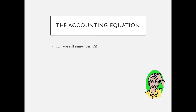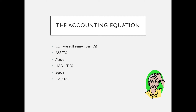A reminder about the accounting equation: assets minus liabilities equals capital. Assets are things that have a debit balance — things that are owned by the business or amounts of money owed to the business. Liabilities are amounts owed by the business.